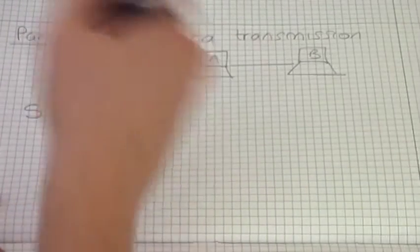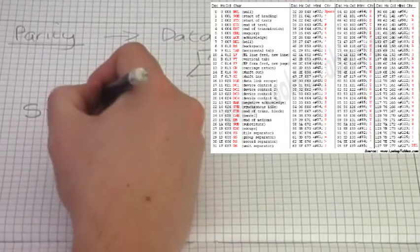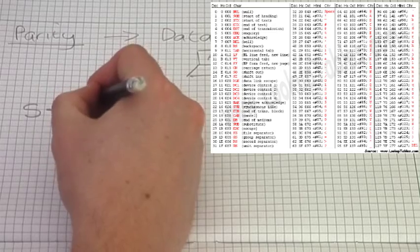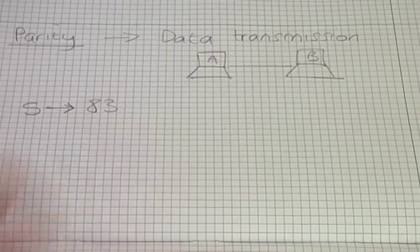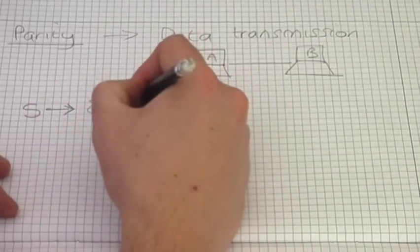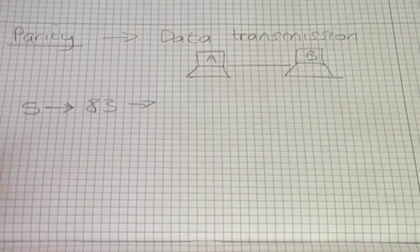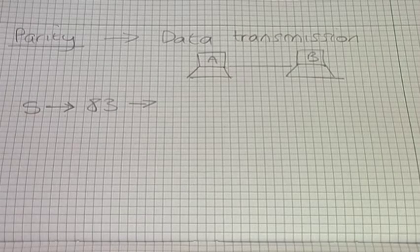Now if we go to the ASCII table, which you can hopefully see in the top right hand corner of the video, you will find that capital S in decimal is represented as the number 83. Obviously we like the number 83, but the computer won't, so we now need to convert this into binary. Each ASCII character is worth seven bits.